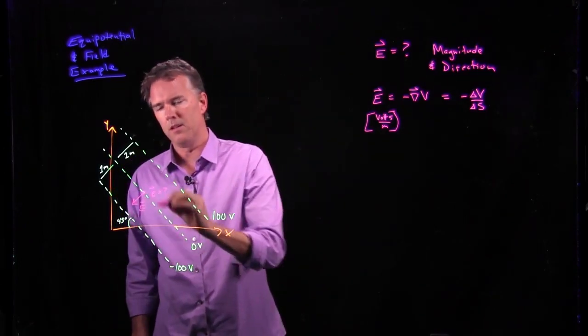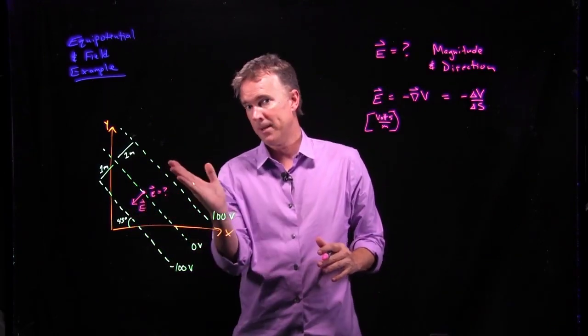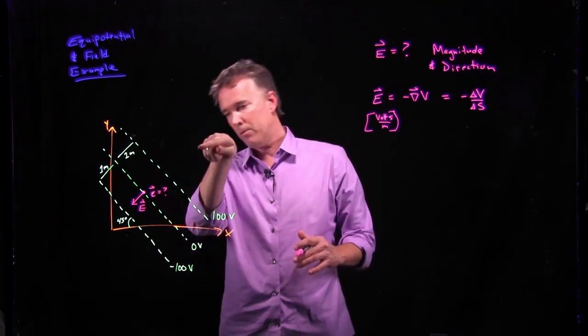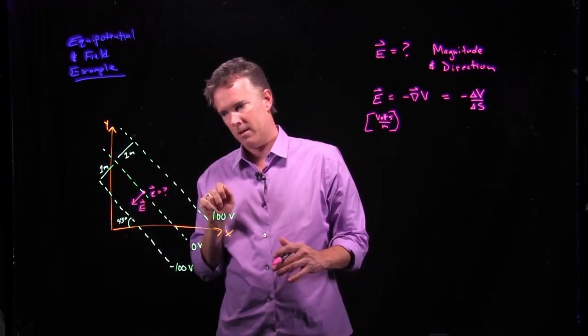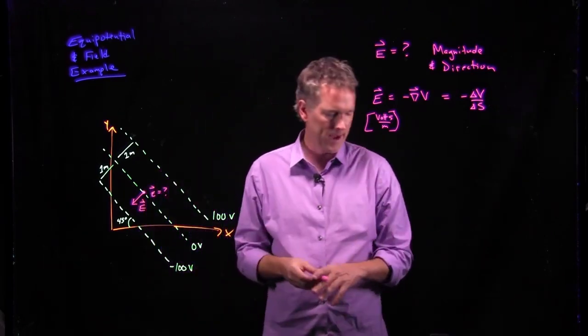One way to think about this is sort of like a mountain range. As the mountains get higher, as you go to higher potential, which way would you roll if you just put a ball on it? It would roll down the hill. So E is in that direction, but how do we calculate the magnitude?